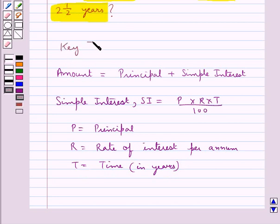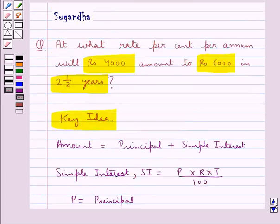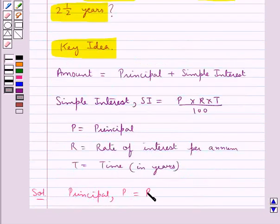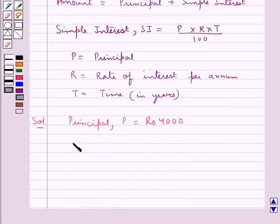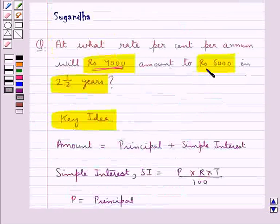This is the key idea to be used in this question. Let's proceed with the solution now. In the question we are given that the principal P is Rs. 4000 and the amount A is Rs. 6000.